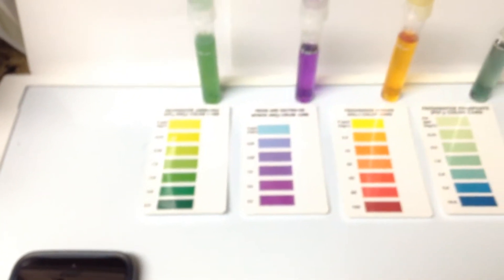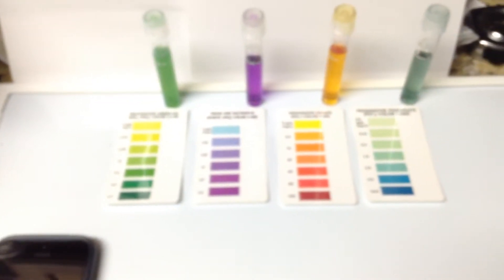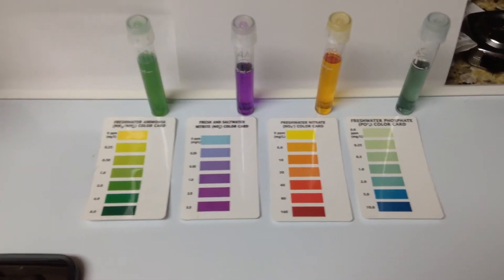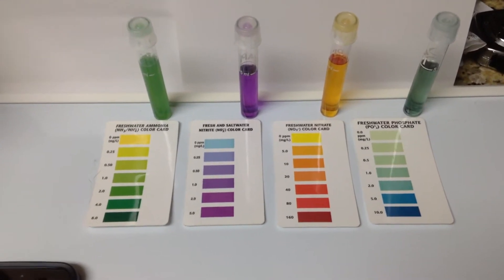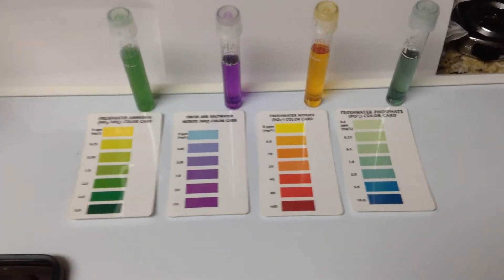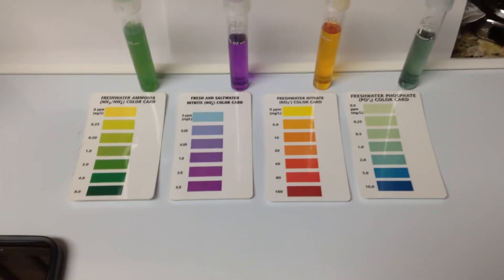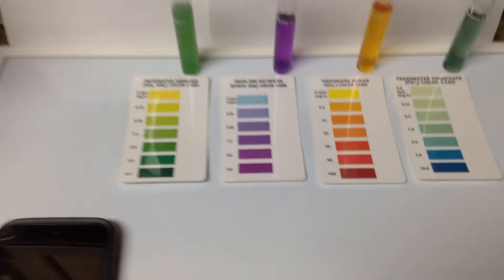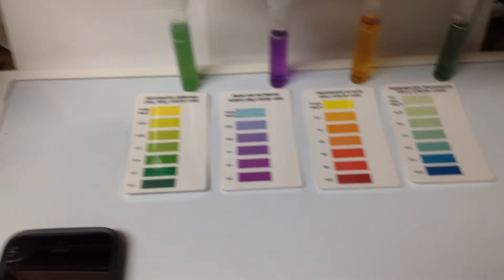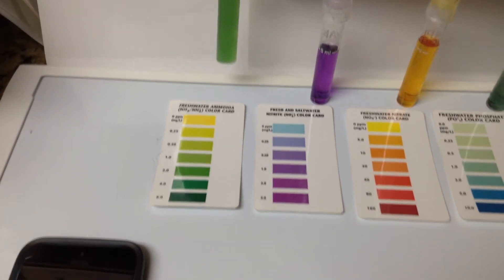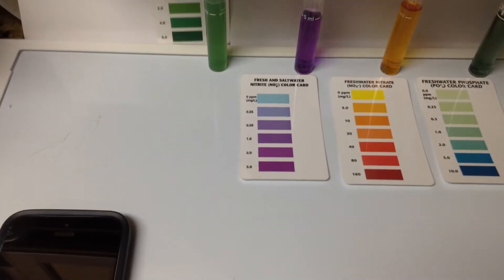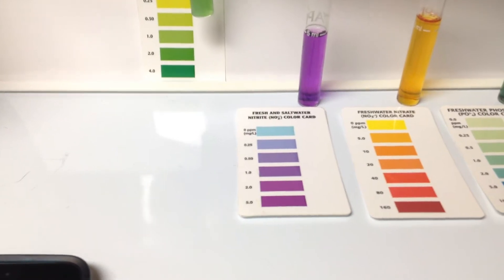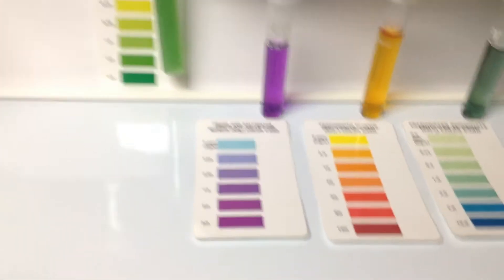All right, welcome back. I've got four tests here. Starting from left working our way to the right, we have ammonia, nitrites with an I, nitrates with an A, and phosphates on the far right. So ammonia is at two parts per million.